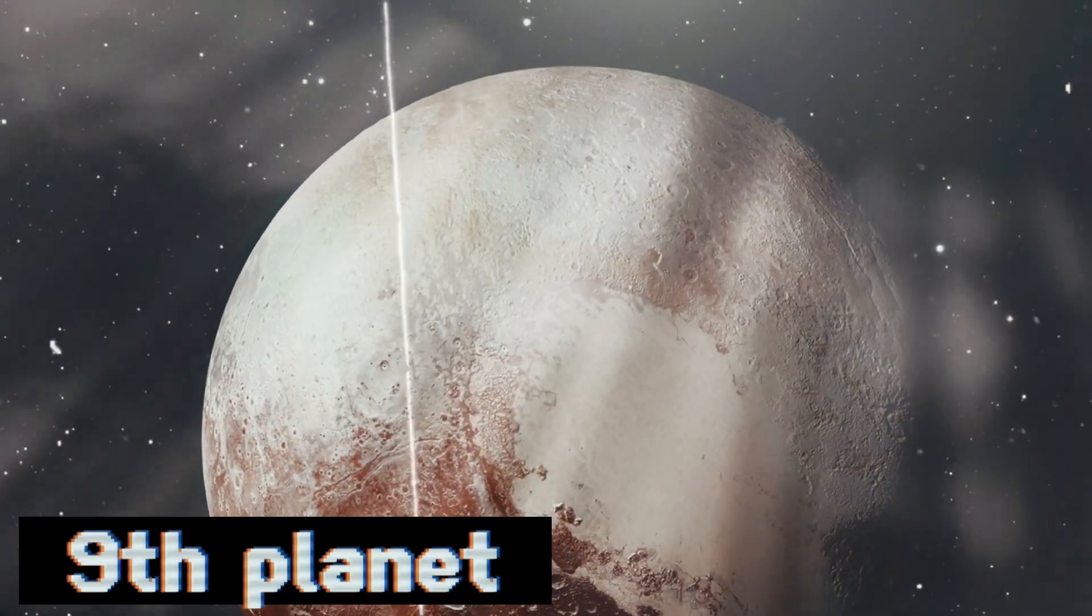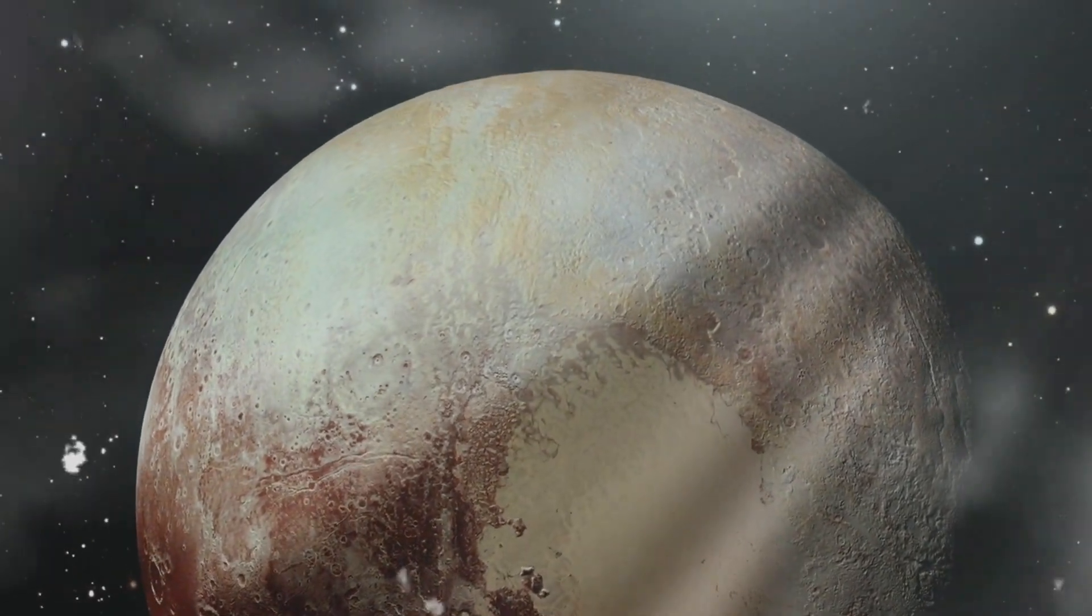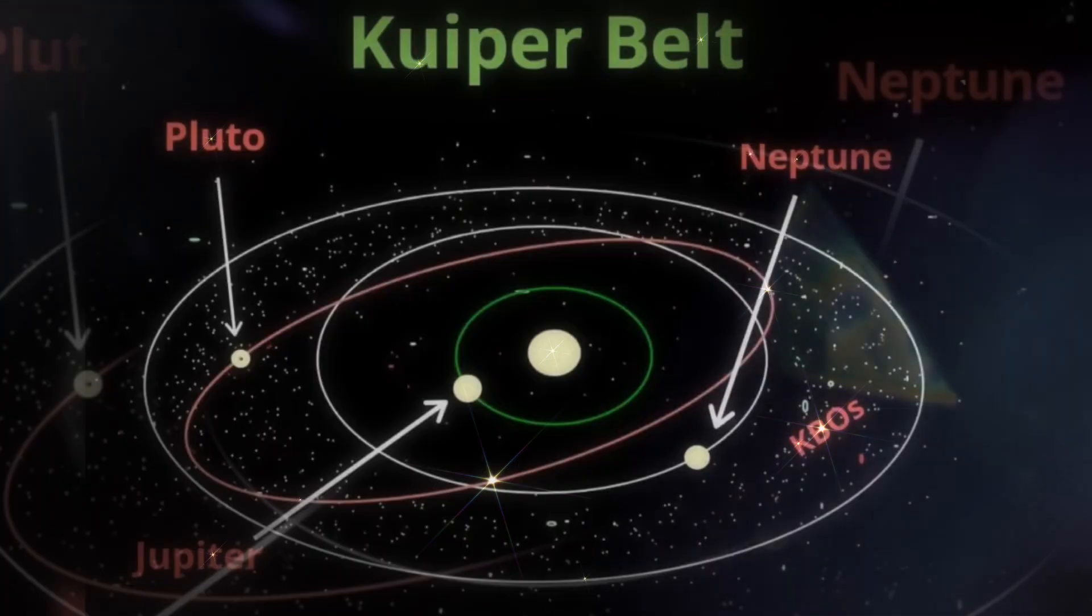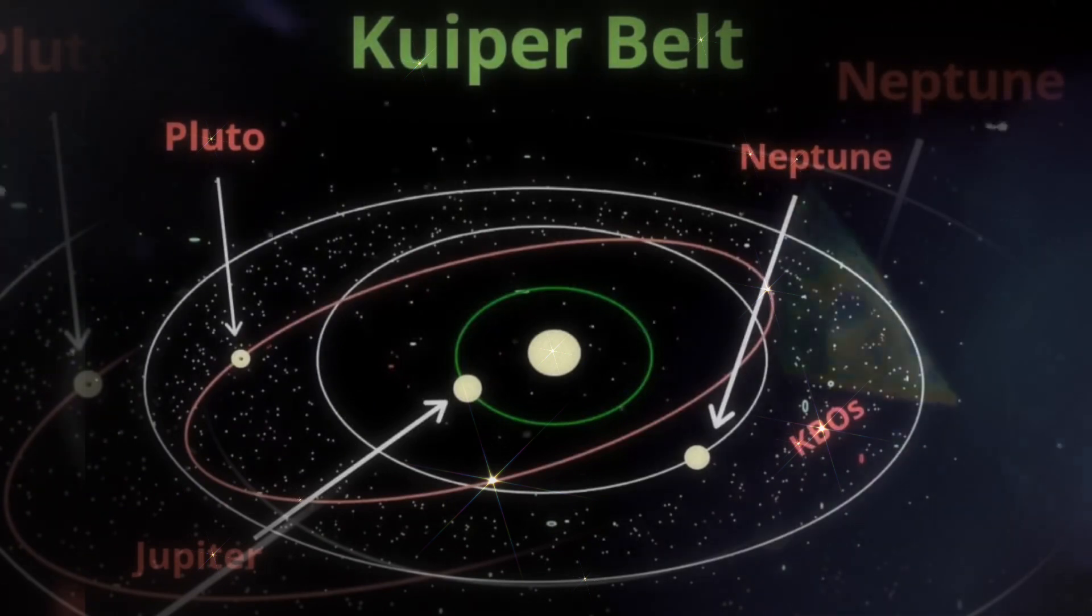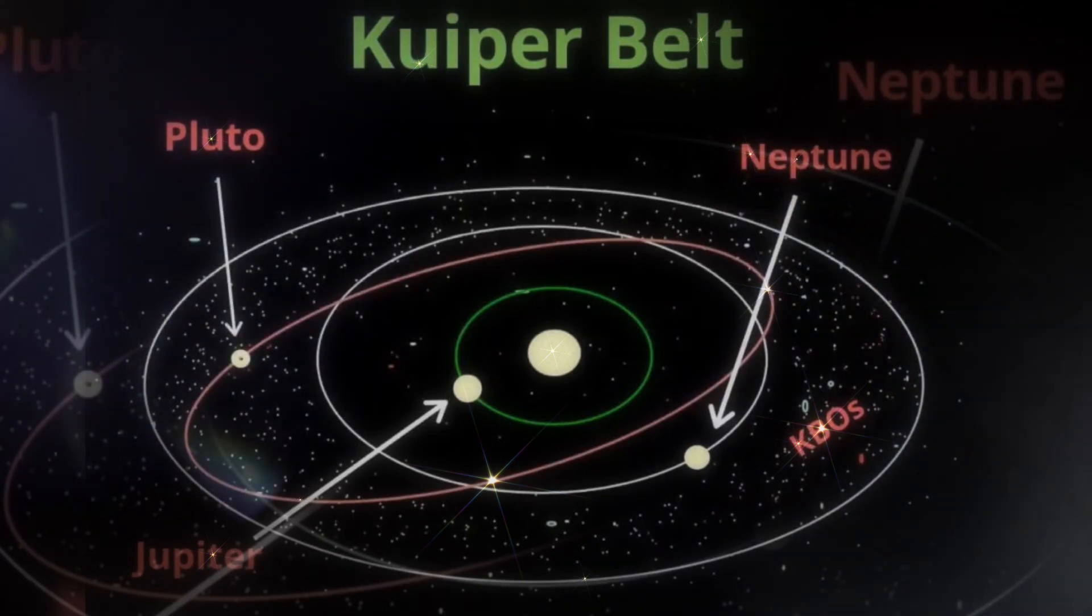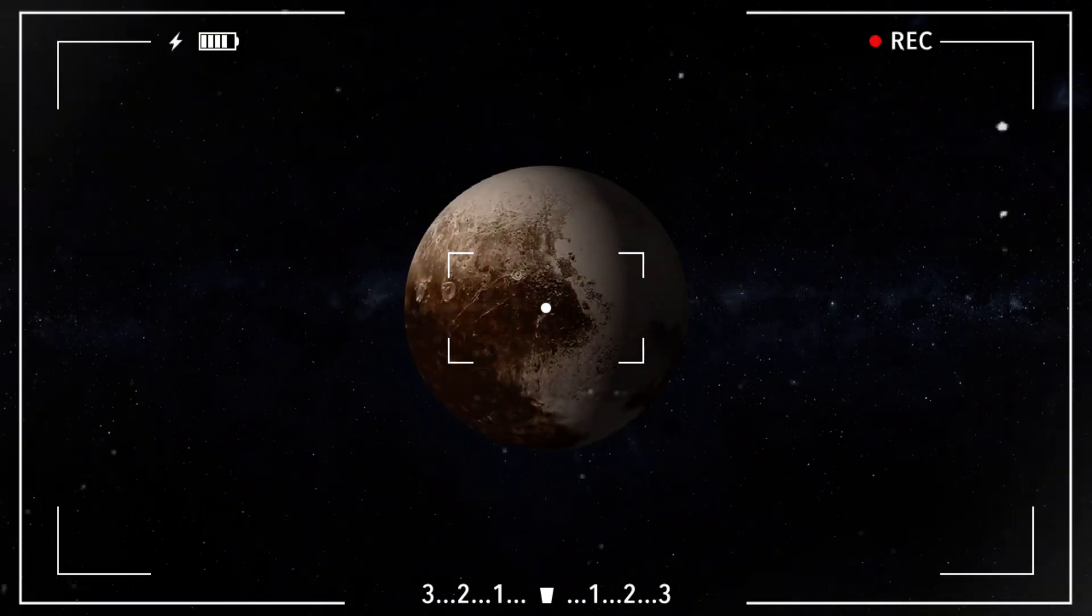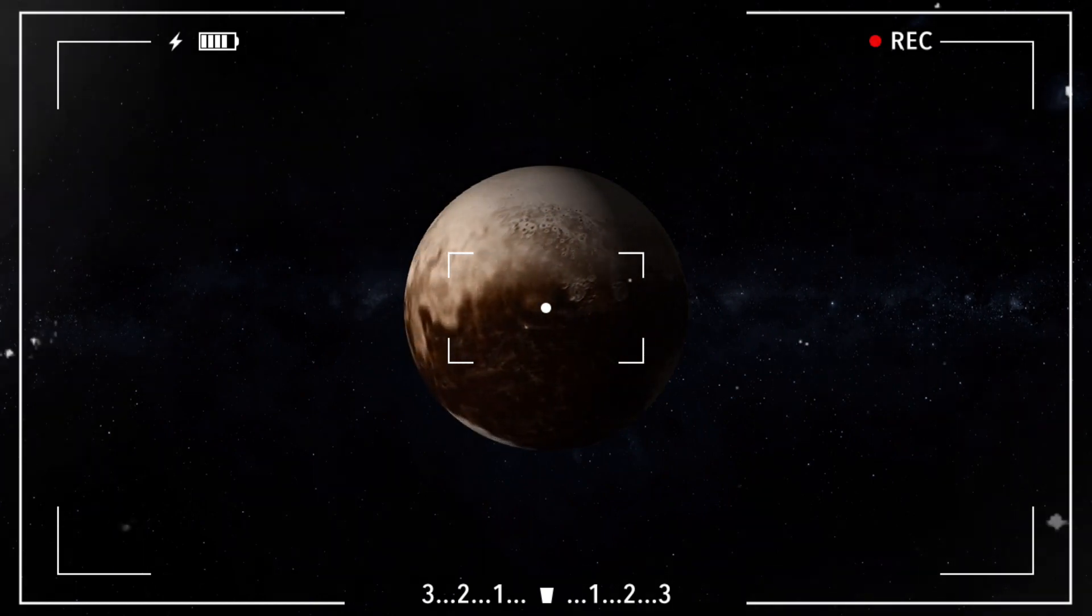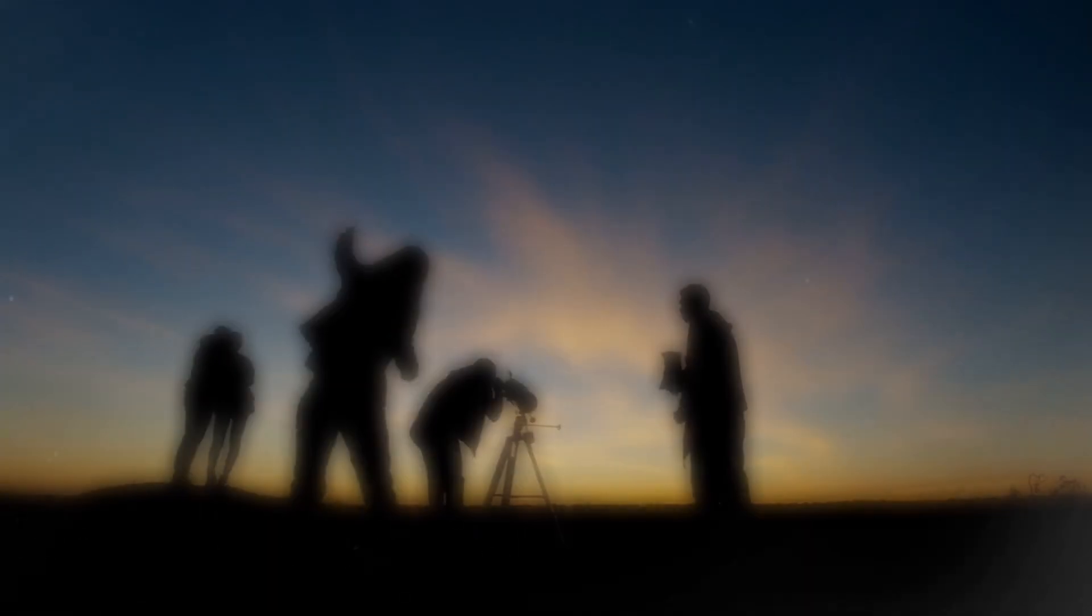Pluto, once honored as the ninth planet in our solar system, now stands as the most massive known dwarf planet. Occupying the far reaches of the Kuiper belt beyond Neptune's influence, Pluto shares its cosmic neighborhood with icy and rocky companions, as well as sizable comets exceeding 62 miles or 100 kilometers in diameter. The year 2006 marked a pivotal moment for Pluto, undergoing a cosmic identity shift as it was reclassified as a dwarf planet. This decision sparked heated debates among astronomers and the public.